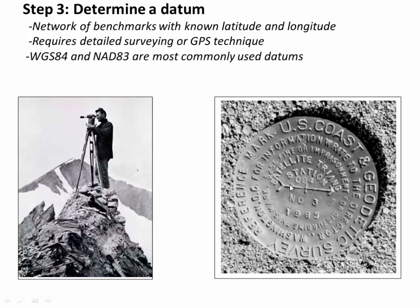Datums gave us the ability to lay out the lat/long grid. But over time, surveying techniques improved and early surveys weren't always exactly right — maybe off by 5, 10, or 20 meters. So new datums have been introduced over time, and if you look at a list of datums you'll find dozens of them. Two of the most common are WGS 84 and NAD 83, which are widely used global datums in GIS.